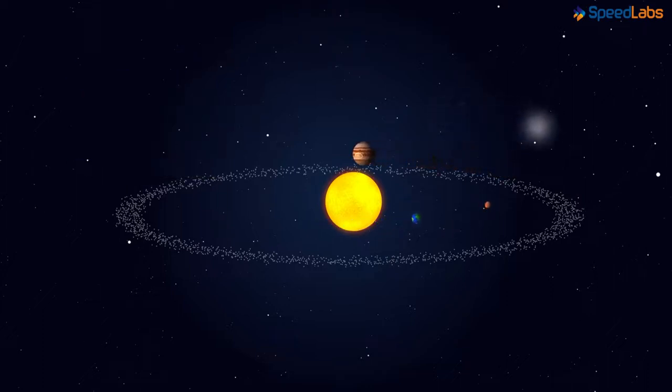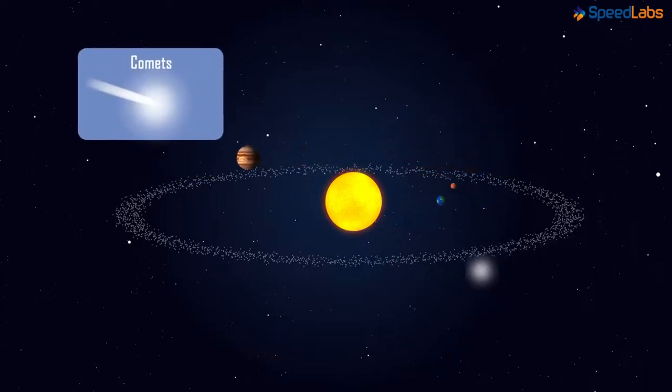Another member of celestial objects is called a comet. They revolve around the high elliptical path of the sun. However, their period of revolution takes a pretty long time to be completed.